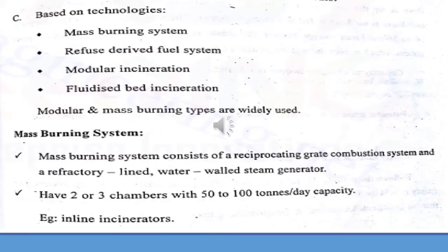Based on technology, the first type is the mass burning system. Other types include refuse-derived fuel systems, modular incineration, and fluidized bed incineration, though modular and mass burning systems are mainly used. The mass burning system consists of a liner or water wall steam generator. It is a multi-chamber system with two or more chambers and can produce up to 50 to 100 tons per day capacity.